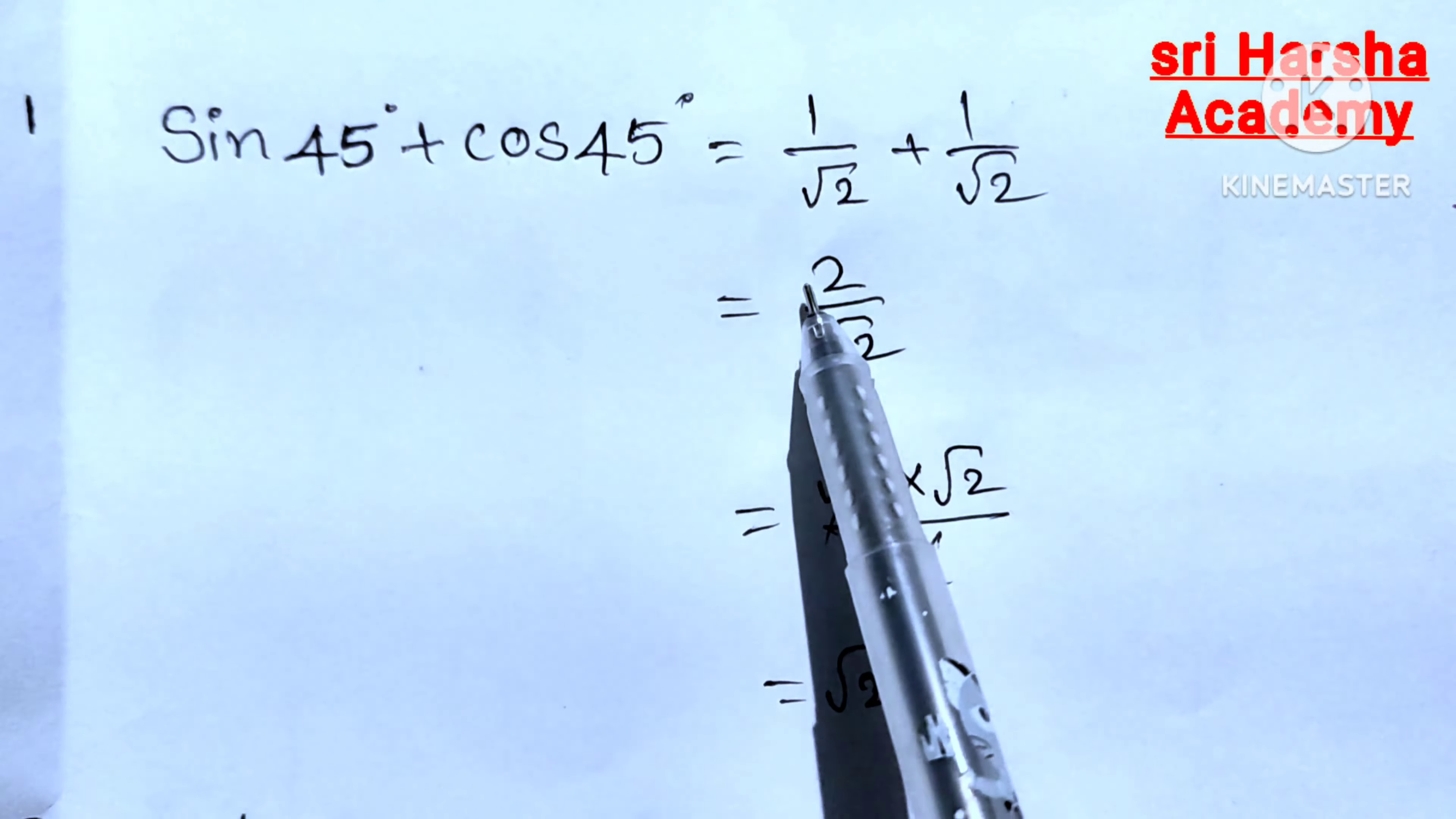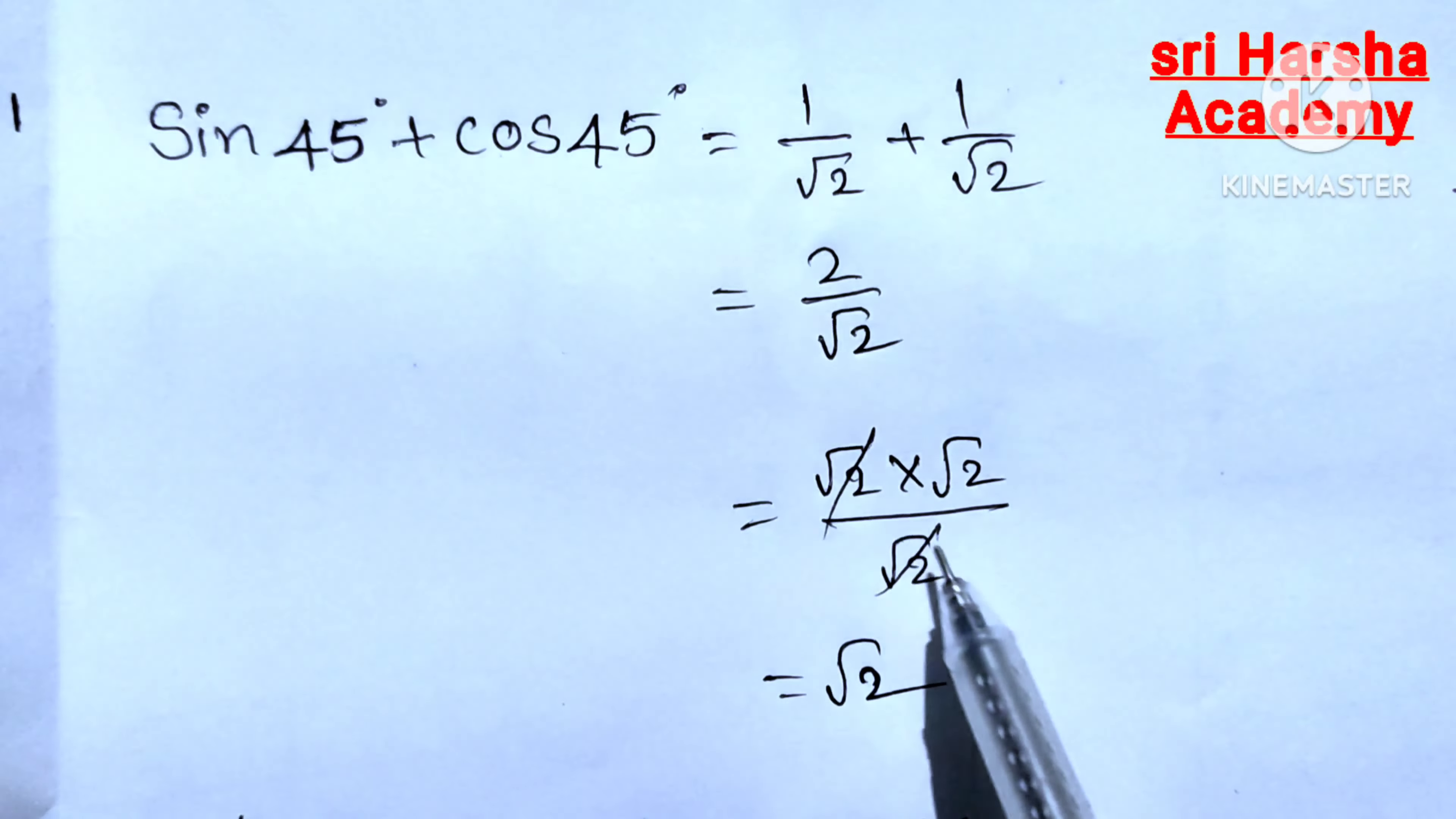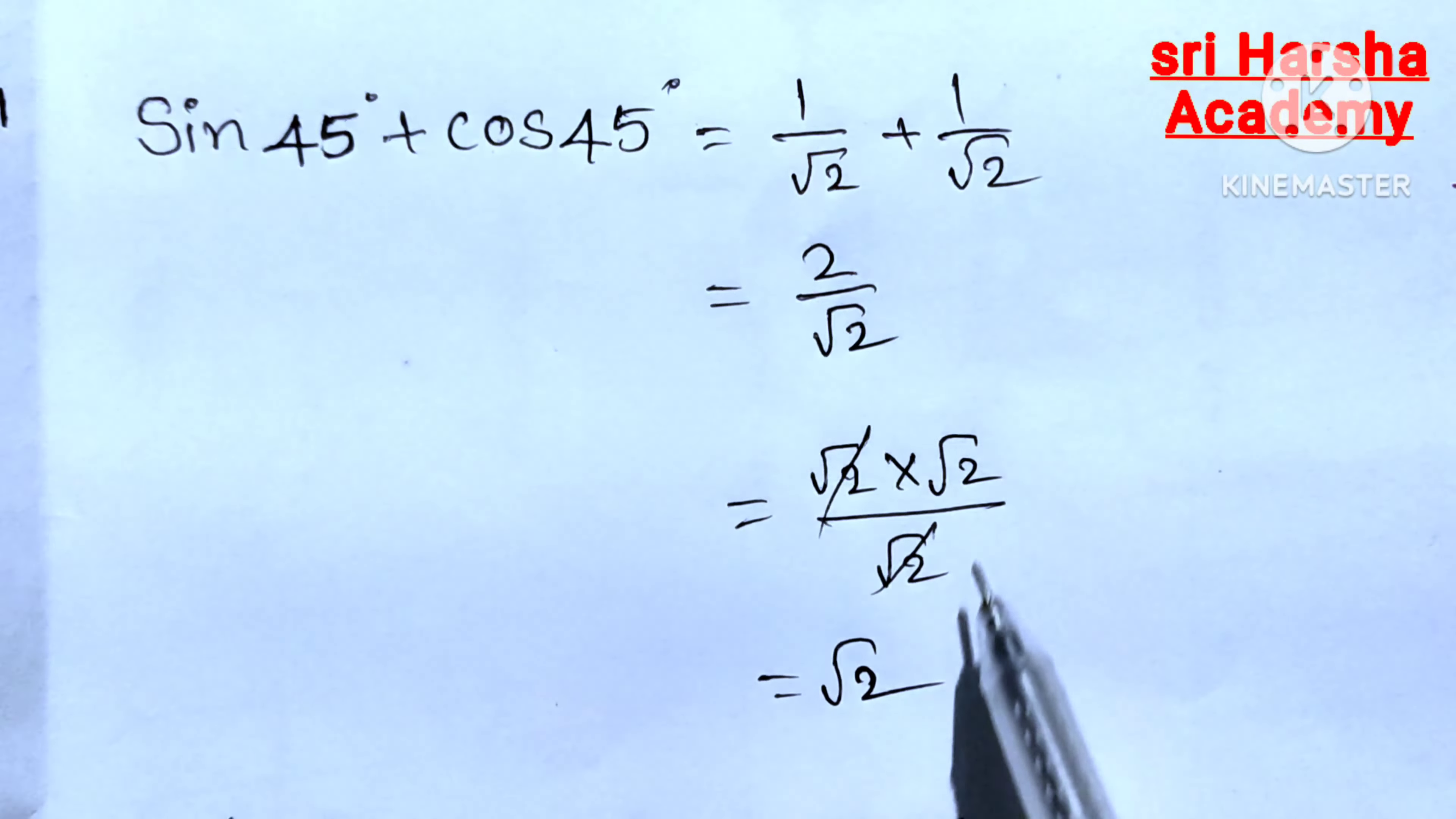Numerator 2 can be written as root 2 into root 2. Next here root 2 root 2 get cancelled, our answer is root 2.